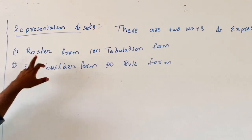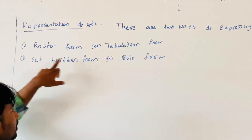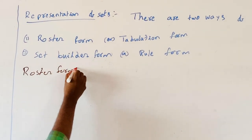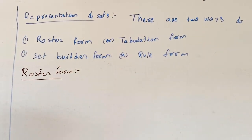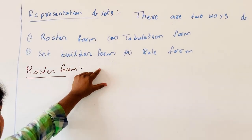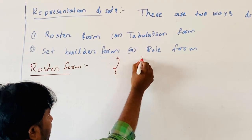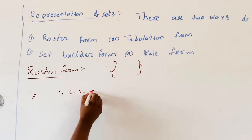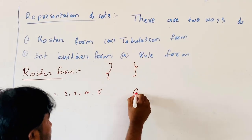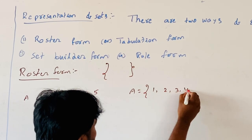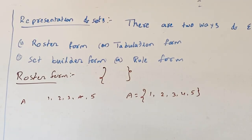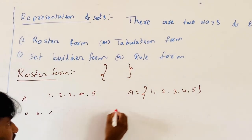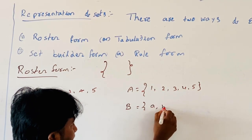There are two ways of expressing sets. First is Roster form, also called Tabulation form. Second is Set Builder form, also called Rule form. In Roster form, the elements are separated by commas and enclosed by curly brackets. For example, set A containing elements 1, 2, 3, 4, 5 is written as A = {1, 2, 3, 4, 5}. Set B containing elements a, b, c is written as B = {a, b, c}.